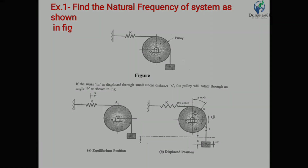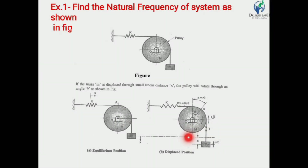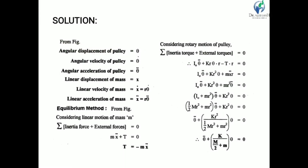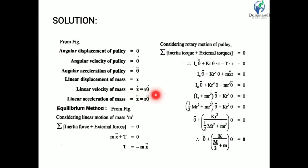If mass m is displaced through a small linear distance x, then the pulley will rotate through an angle theta. The linear displacement x is equal to r·theta. So angular velocity is theta-dot and angular acceleration is theta-double-dot. The linear velocity of mass is x-dot, equal to r·theta-dot, and linear acceleration is x-double-dot equal to r·theta-double-dot.